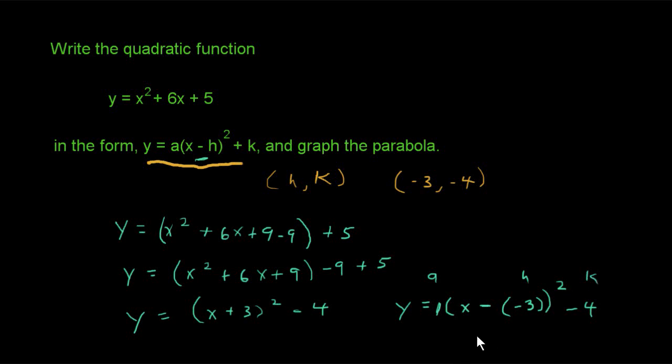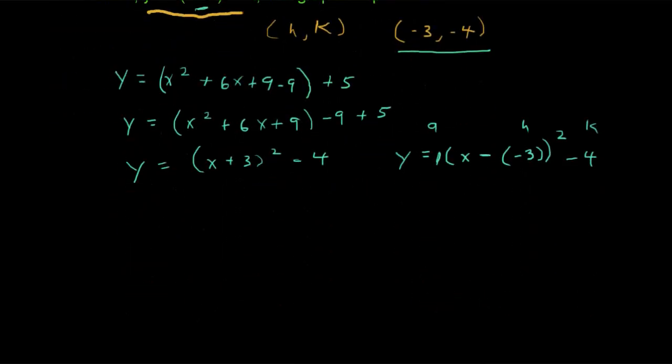And sure enough, the vertex then is negative 3, negative 4. Okay, the next step is we want to graph what we have so far. So far we found the vertex, so let's go ahead and graph that.